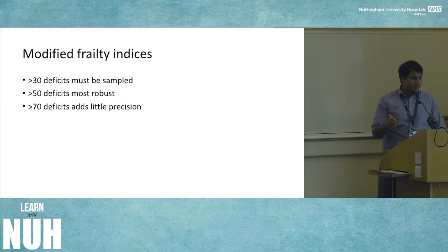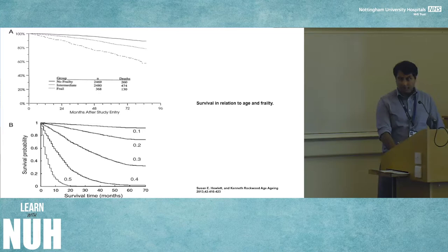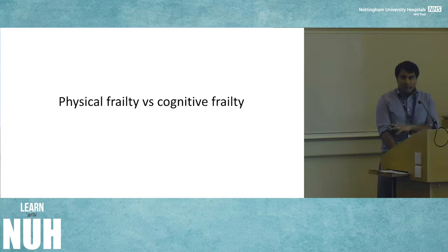Kaplan-Meier curves validate both models with respect to mortality and survival. The Linda Fried phenotype model shows that if you're frail you're less likely to be alive seven years later. The Rockwood frailty index model similarly shows that the higher the frailty index score, the less likely you are to be alive seven years on.